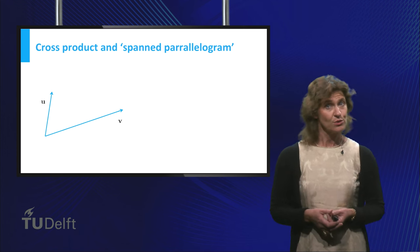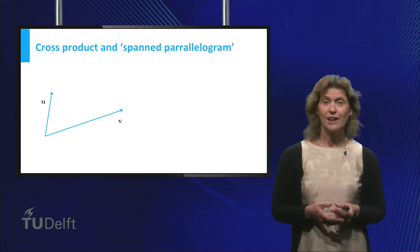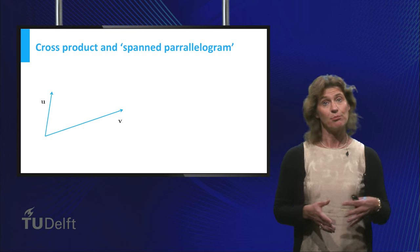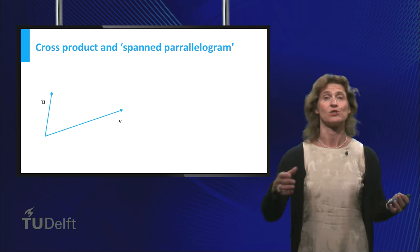This length though has a clear and nice geometric interpretation. If u and v are not scalar multiples of each other, they actually lie in a plane. A plane is a two-dimensional subset of the three-dimensional space.